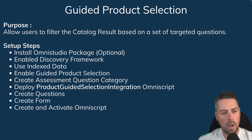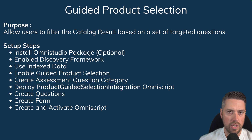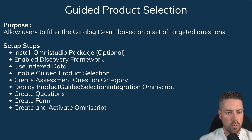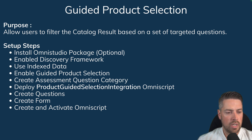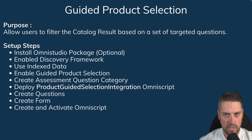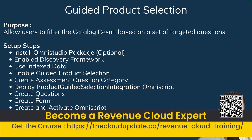A couple of setup steps we'll go through today. First, although optional, you can install the OmniStudio package. Guided Product Selection can be enabled either with or without the package — today we're going to look at how to do it without the package. Then we'll enable the Discovery Framework in Revenue Cloud, set up the indexed data for products, enable Guided Product Selection, create our assessment question category, deploy the standard OmniScript required, create our questions and forms, and finally create and activate our OmniScript. Then we'll test that out against a quote.